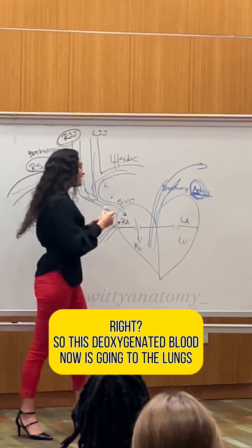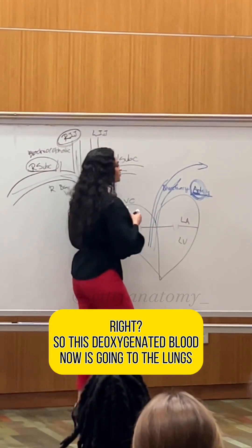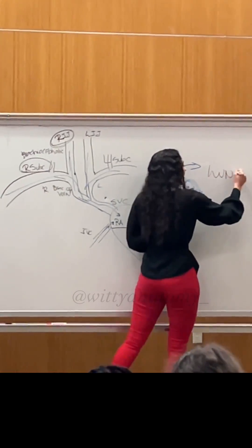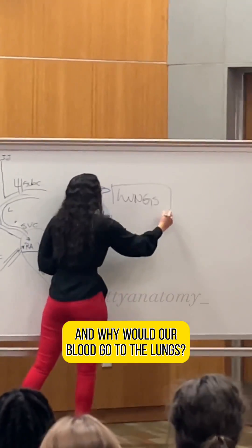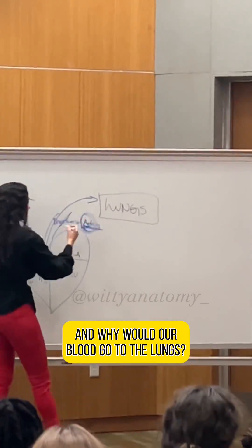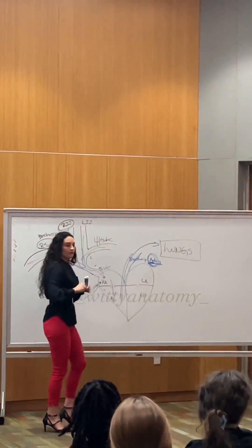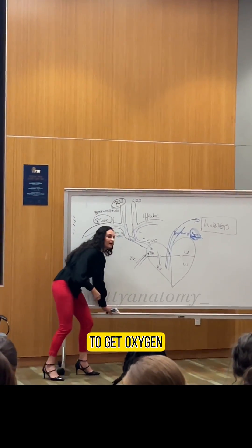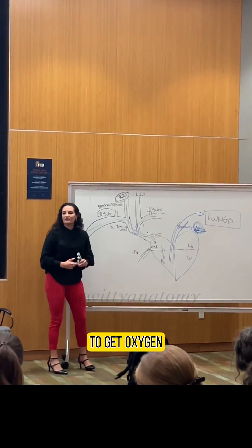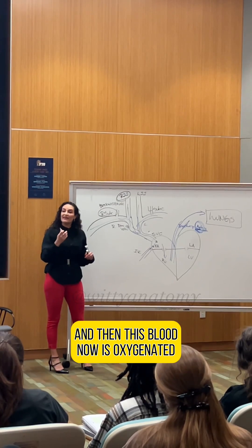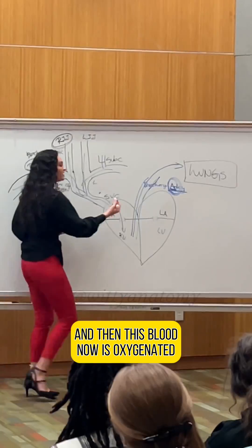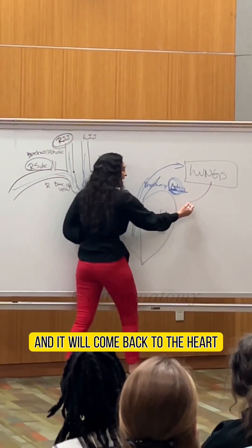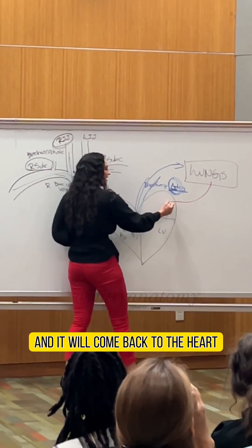This deoxygenated blood is now going to the lungs. And why would our blood go to the lungs? To get oxygen. Then this blood becomes oxygenated and it will come back to the heart.